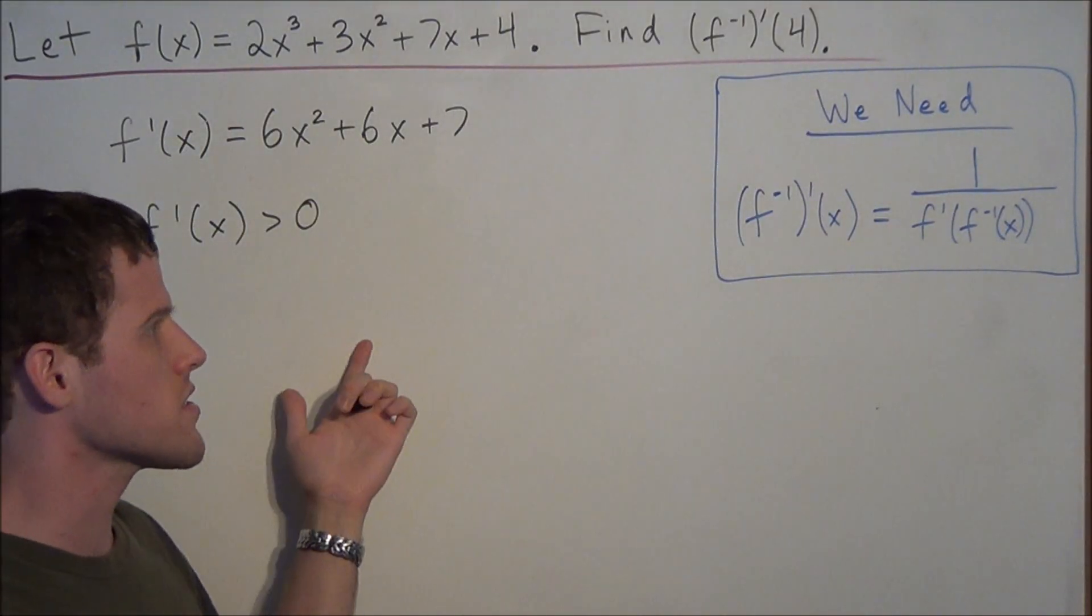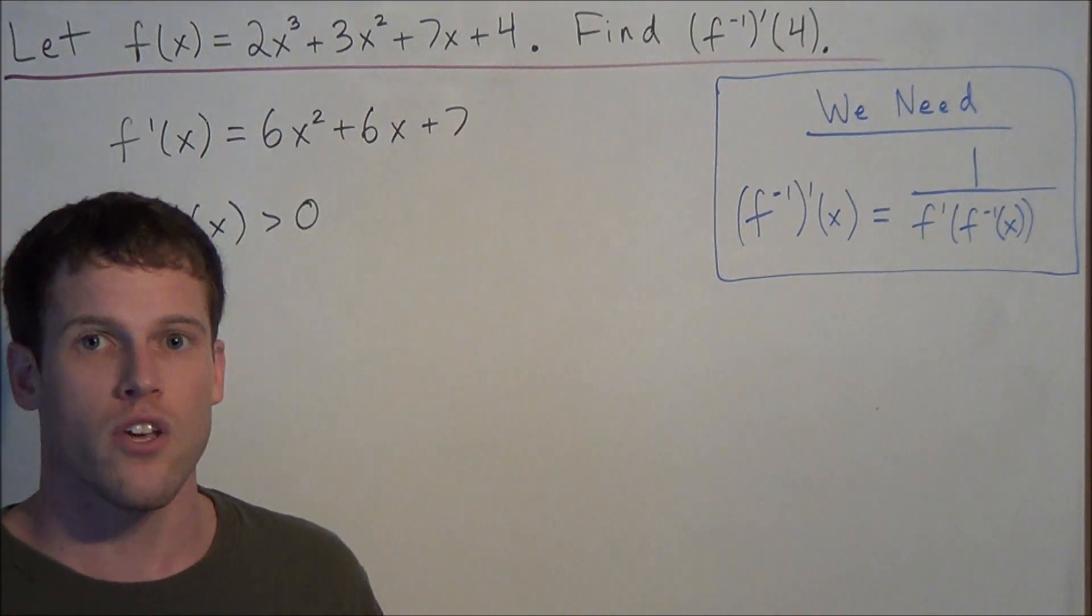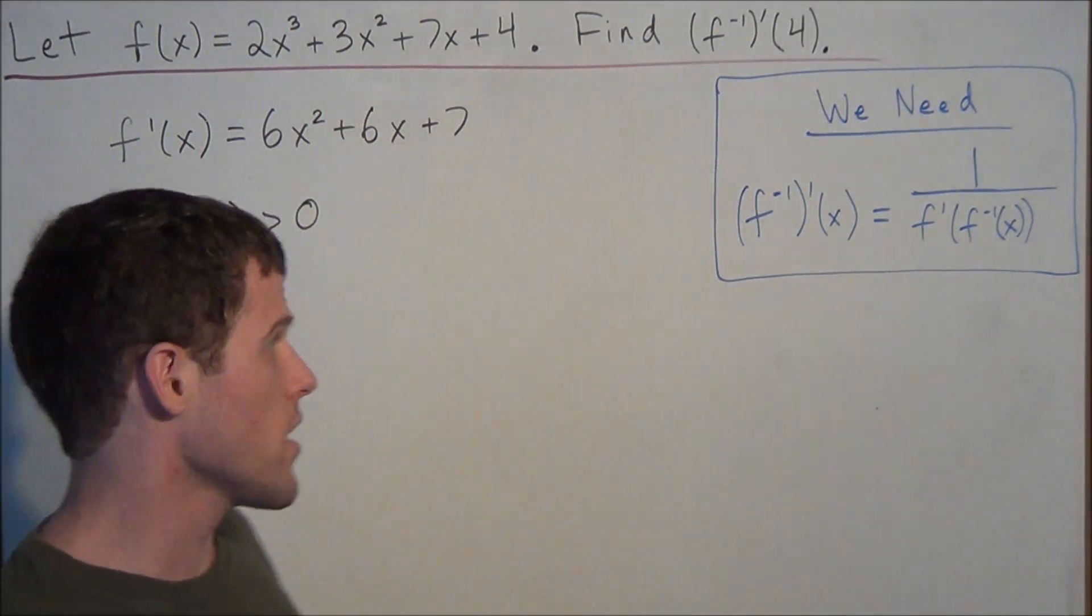So I'm not going to dive too heavily into the theory, but we just need to show that it's 1 to 1 and differentiable in order to use this equation. So now that we know this, we're just going to move forward and find the derivative of the inverse at 4.